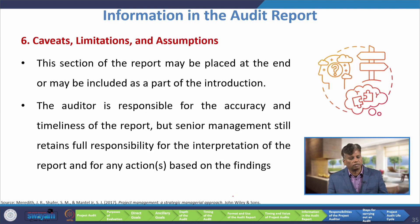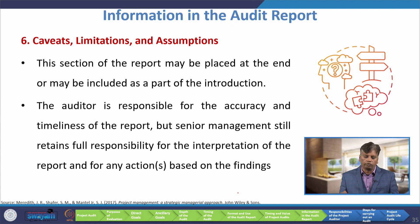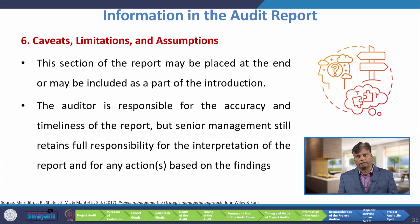The next item expected covers limitations and assumptions. This section of the report may be placed at the end or may be included as part of the introduction. The auditor is responsible for the accuracy and timeliness of the report, but a senior manager still retains full responsibility for the interpretation of the report and for any actions based on it.